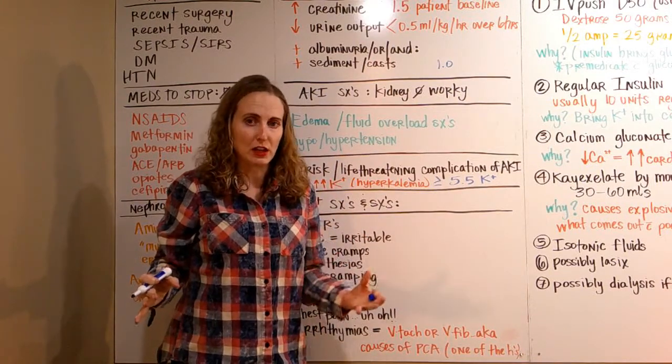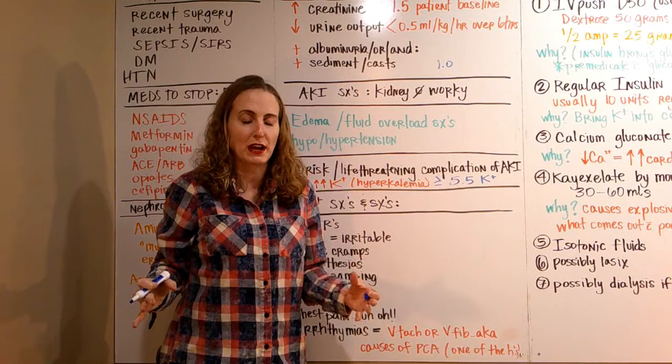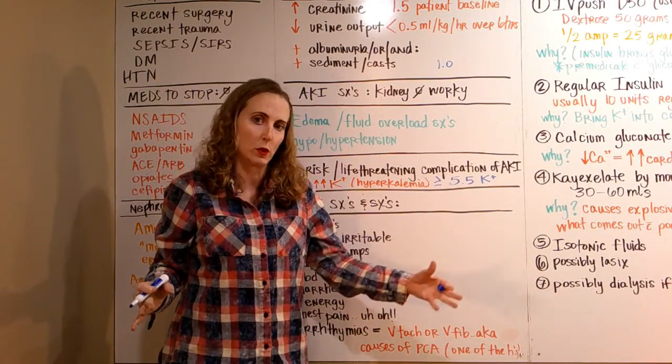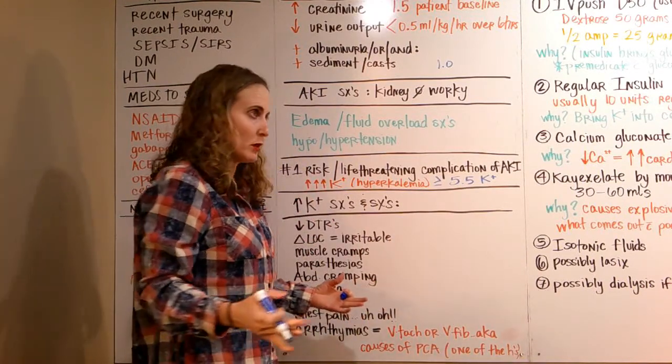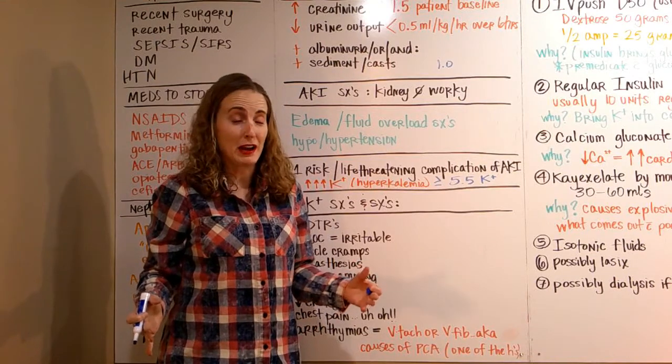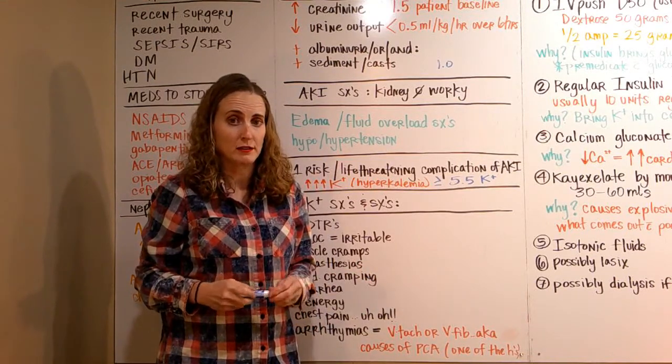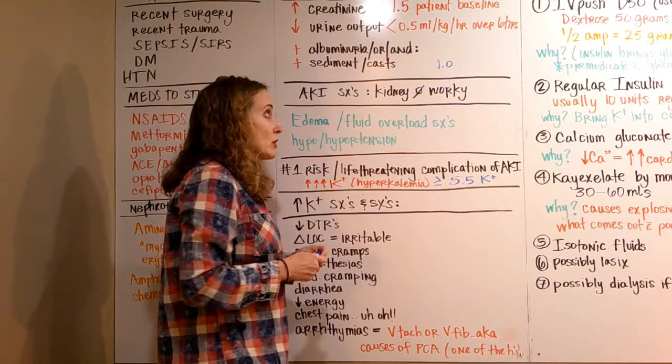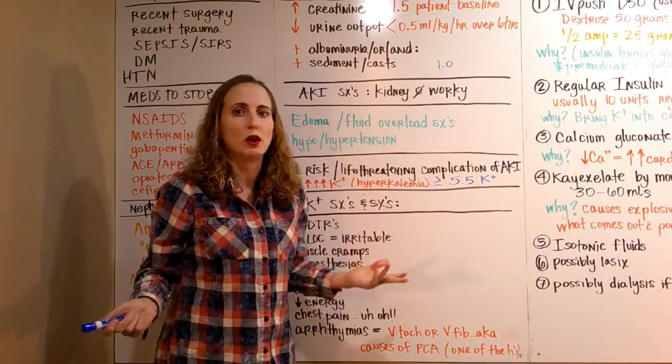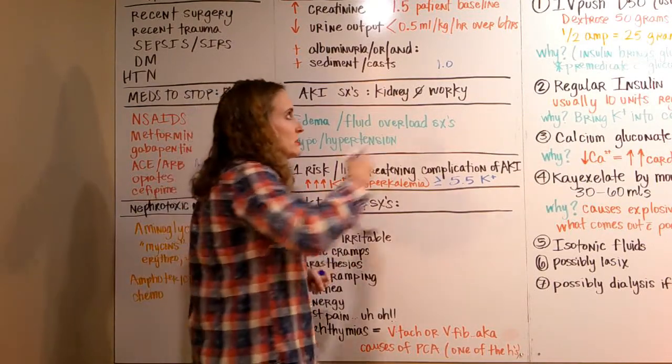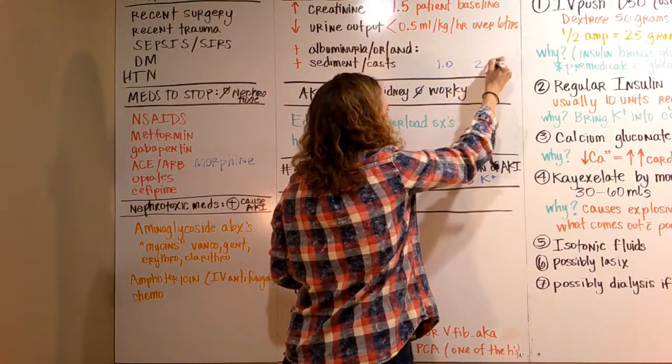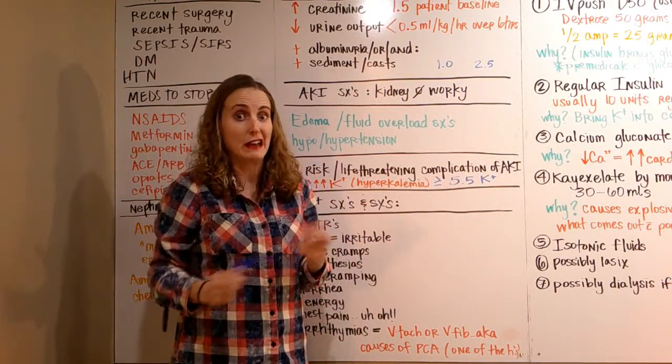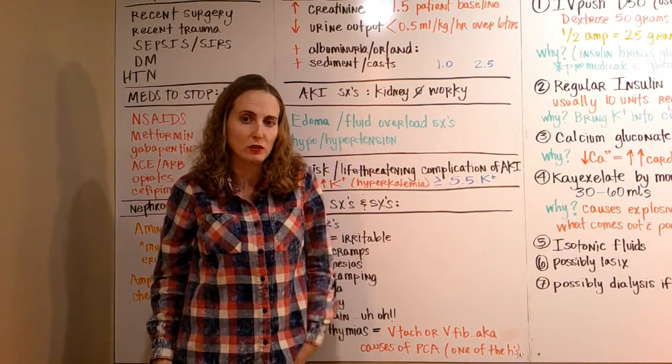If they come in through the ER, you may or may not have a baseline creatinine. Let's pretend their baseline creatinine is one, just to make the math easy. That means once that creatinine hits 2.5 or above, that's now considered an acute kidney injury by the creatinine criteria.